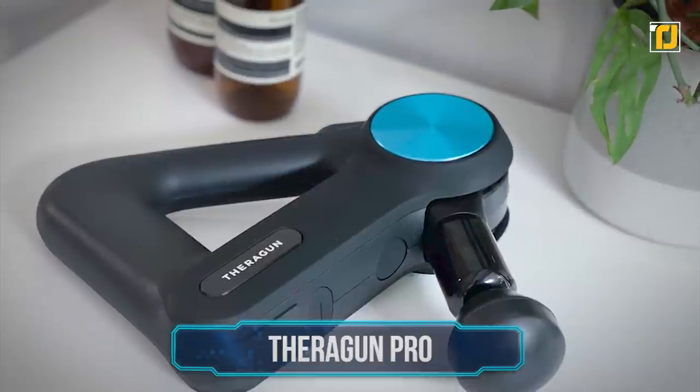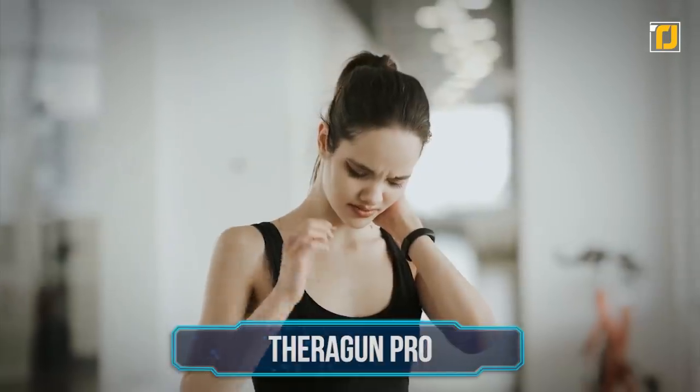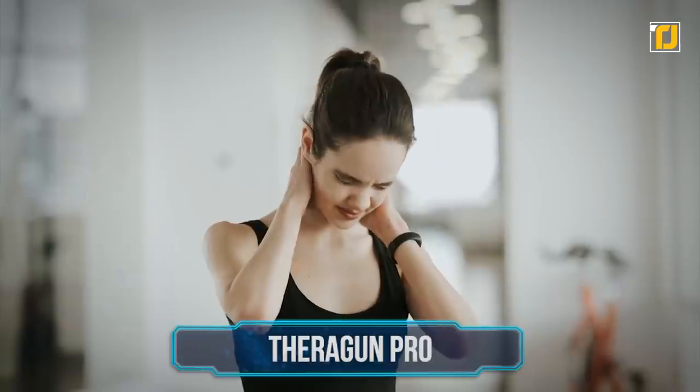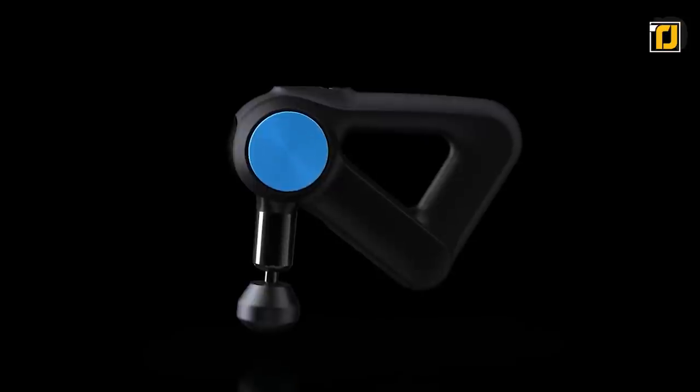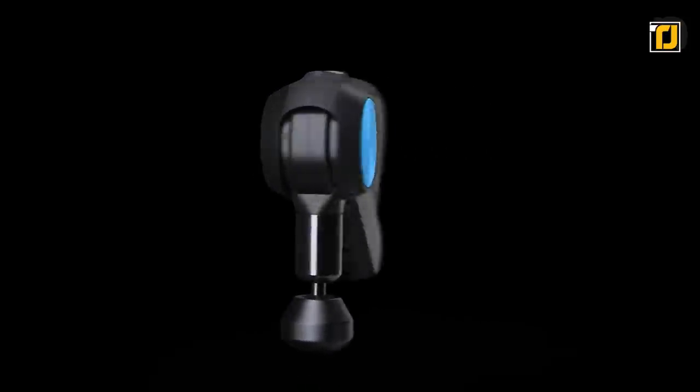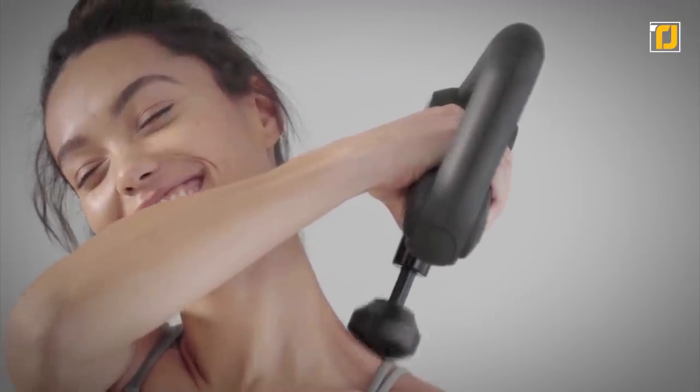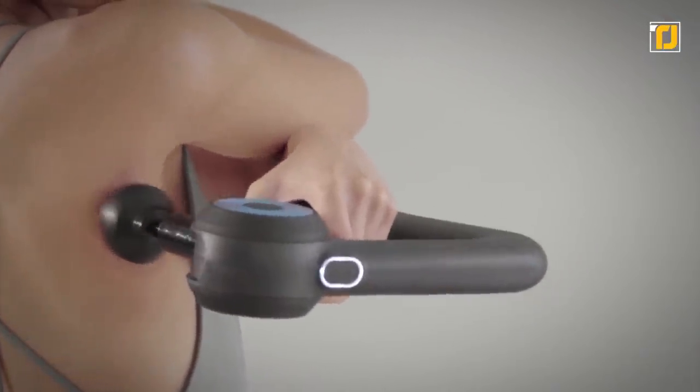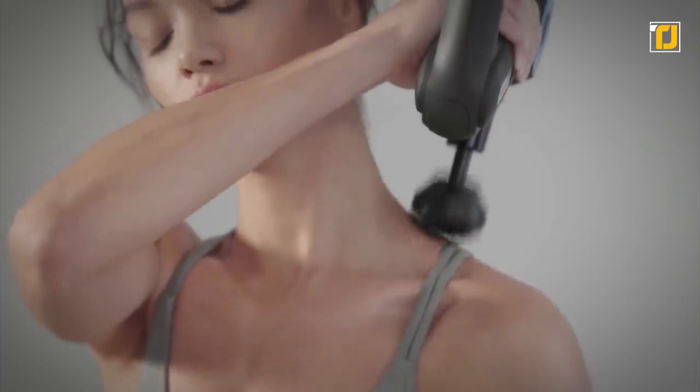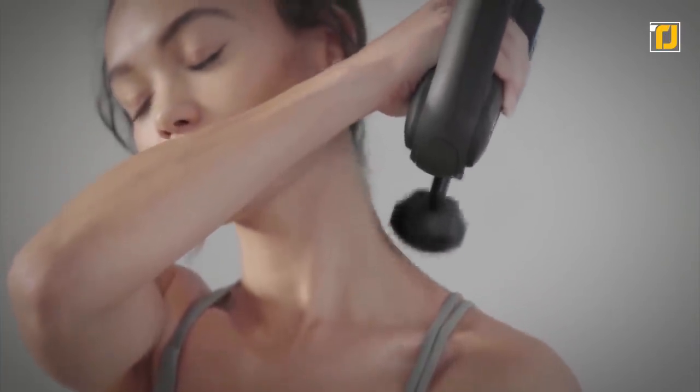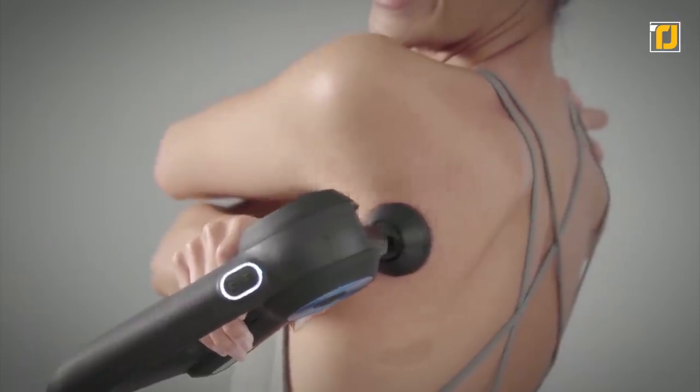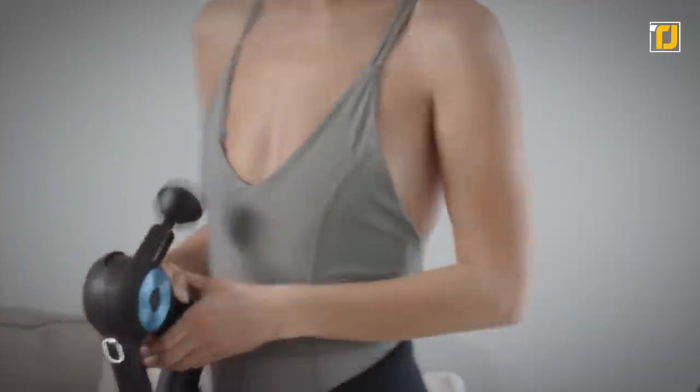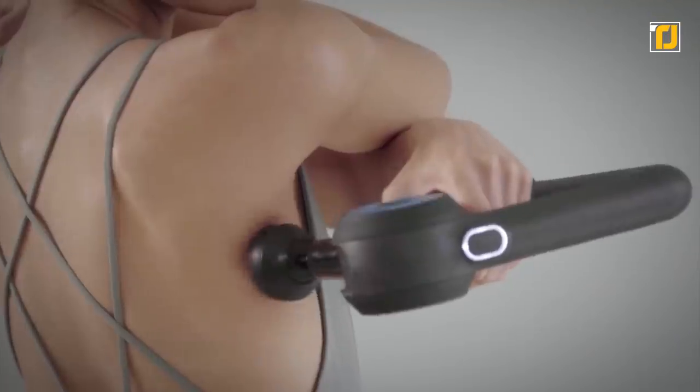Number 6. Theragun Pro. Having an aching body even when you're not that old is worrying and quite annoying too. But a simple muscle gun can fix that, especially the Theragun Pro. This gun is the most powerful and advanced model on the market, with speed options that can reach anywhere from 1750 to 2400 percussion per minute. It also features an OLED screen, six different attachments for different areas of your body, and even an app that keeps track of your recovery.